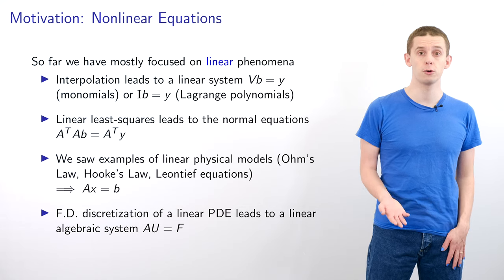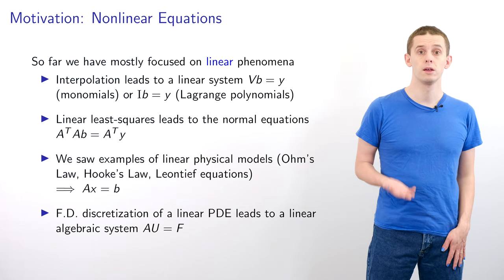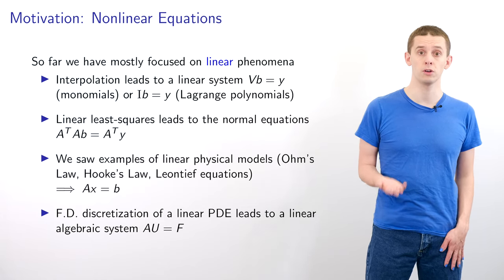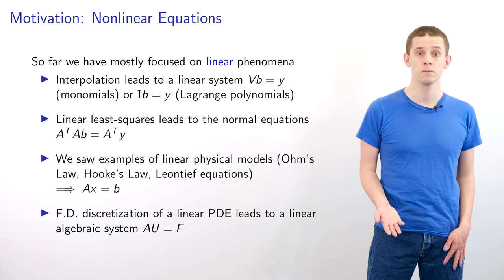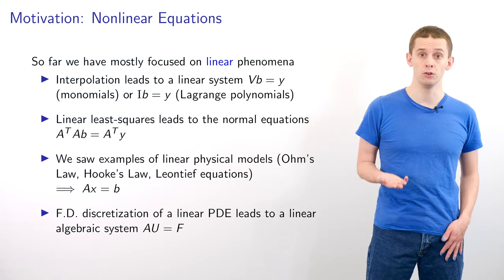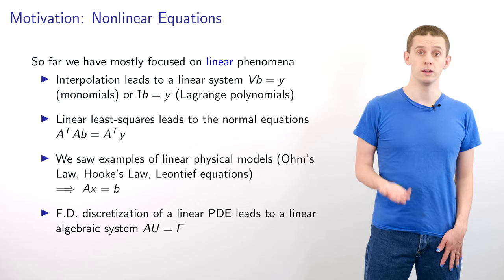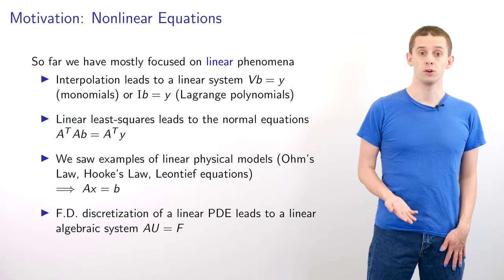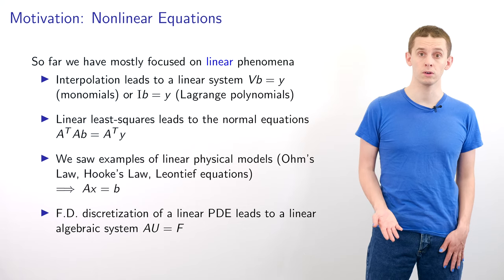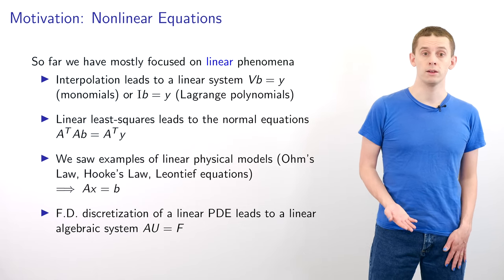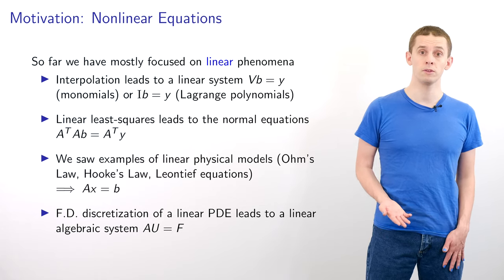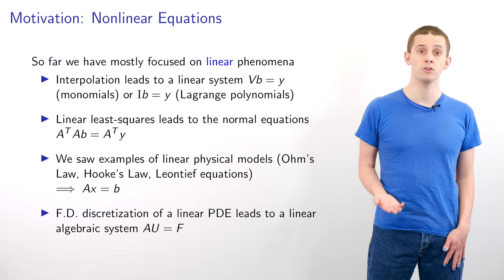So far in the course we mainly focused on linear phenomena. For example, in unit 1 on data fitting we showed that polynomial interpolation could be solved by inverting linear systems. When we looked at linear least squares problems we found that it led to the normal equations which were again a linear system that we could solve. We also introduced several linear physical models such as Ohm's law, Hooke's law and the Leontief equations, and when we looked at finite difference discretizations of linear PDEs we found that those led to linear algebraic systems to solve.